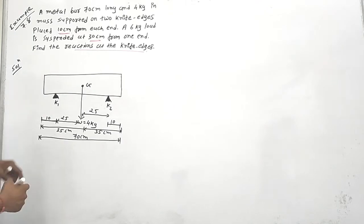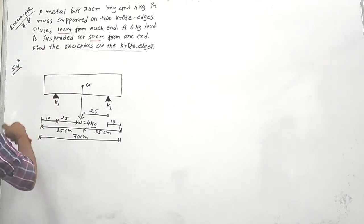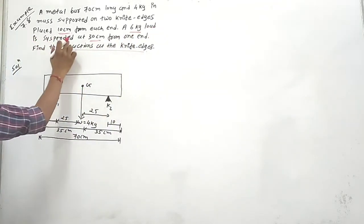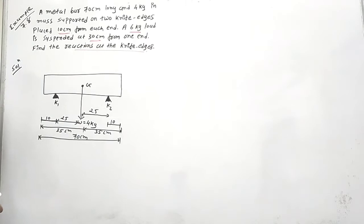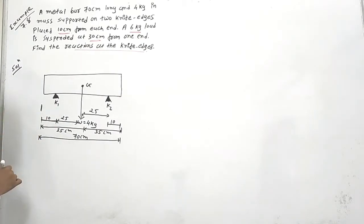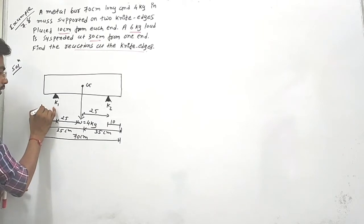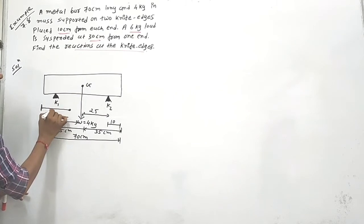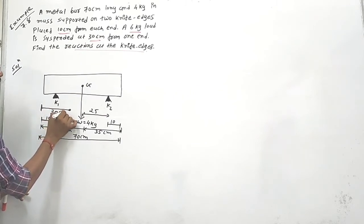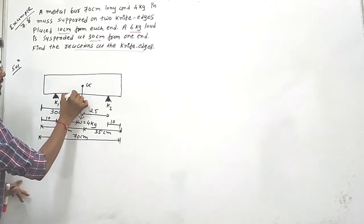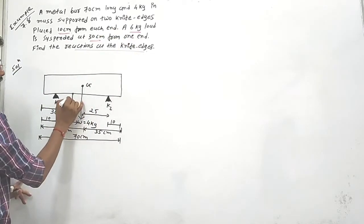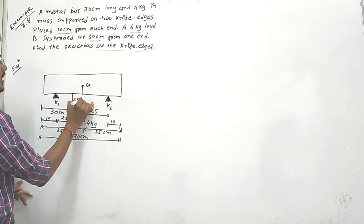As given in the data, the 6 kg load is suspended at 30 cm from one end. So from this end, the distance is 30 cm to the point where the 6 kg load is applied.